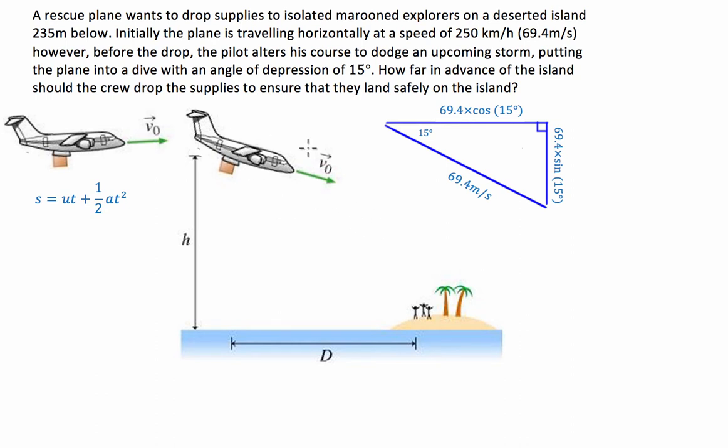Like the other one, what we're going to do is figure out what each of our component vectors are that the plane has initially just before he drops the package. So I've drawn this vector triangle here for you. We've got our 250 kilometres an hour or 69.4 metres a second, which is this component here in the dive. And that can be broken down into that times the cosine of the angle and that times the sine of the angle.